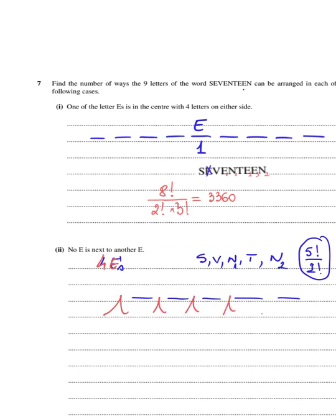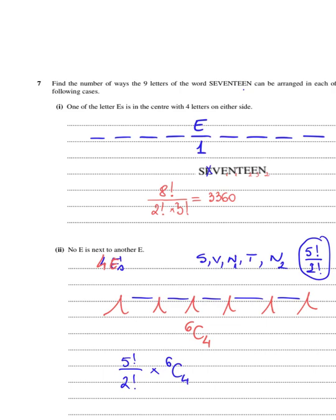I have gaps between and around the five letters - six positions to choose from. If I have six positions to choose from to place my E's, these are 6C4 ways. Therefore, in total I'm going to have 5!/2! times 6C4 ways of arranging the letters according to the criterion.